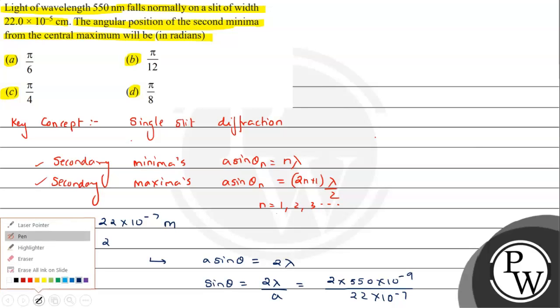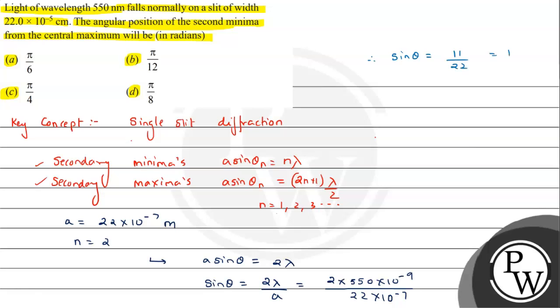Therefore, sinθ will be equal to 1100×10^-9 = 11×10^-7 upon 22×10^-7. When we simplify this, we can write therefore sinθ equals 1/2.